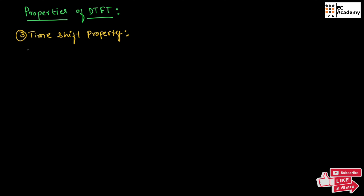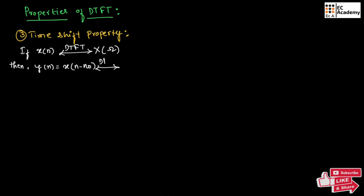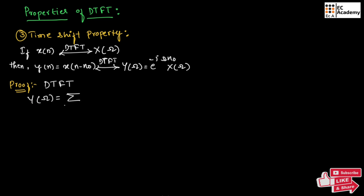Now let us understand the time shift property. It states that if x of n has DTFT X of omega, then if we take y of n equal to x of n minus n naught, for this if we perform DTFT we will obtain Y of omega equal to exponential to the power of minus j omega n naught times X of omega. From the definition of DTFT, we can write Y of omega is equal to summation of n from minus infinity to infinity of y of n exponential to the power of minus j omega n.